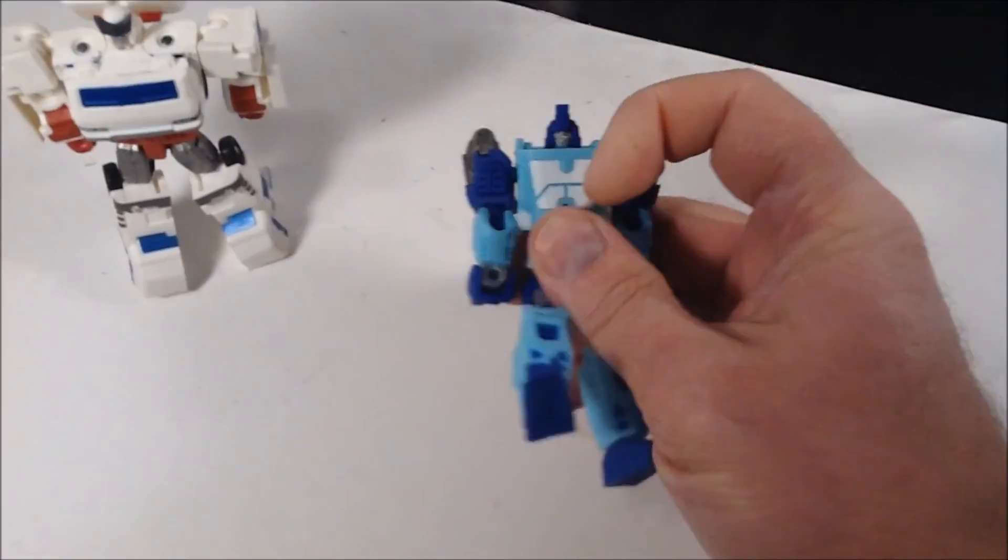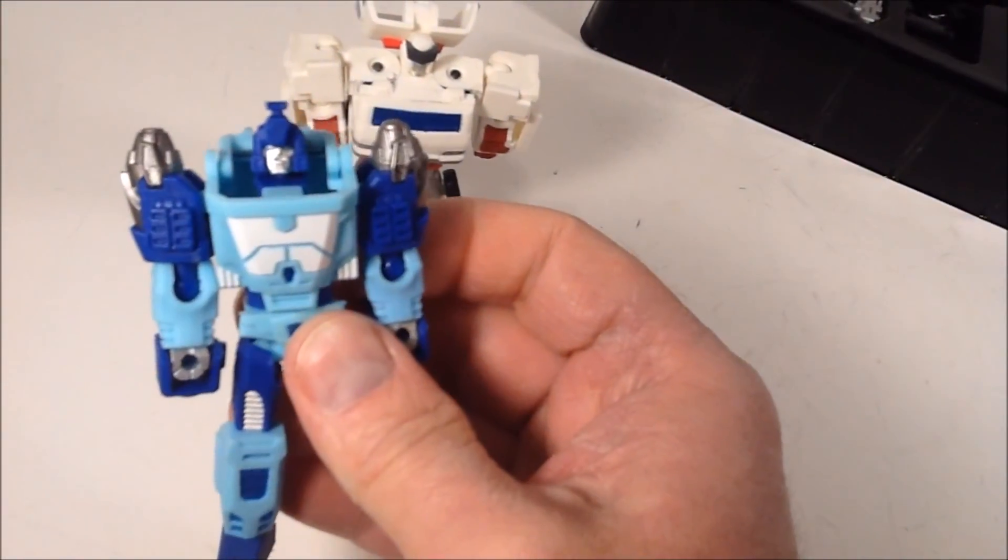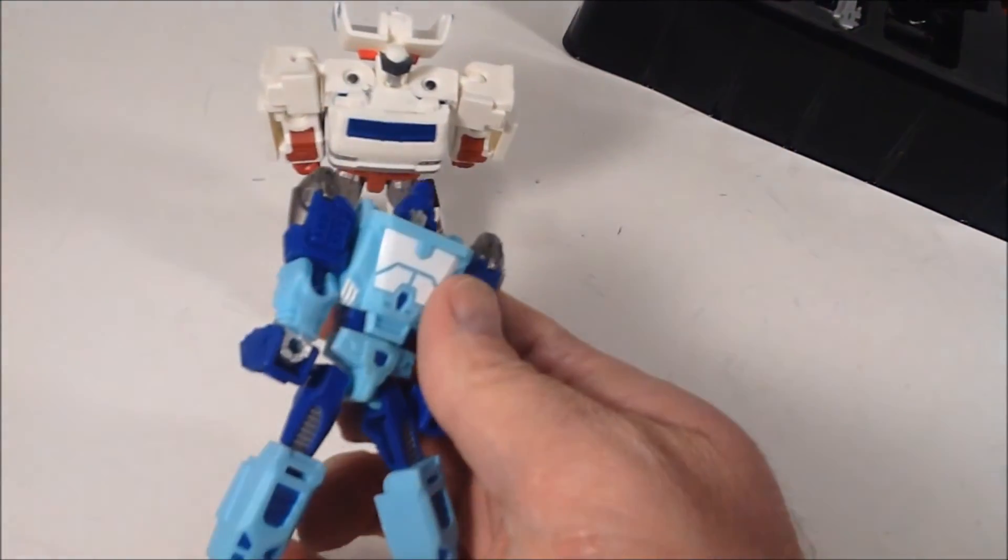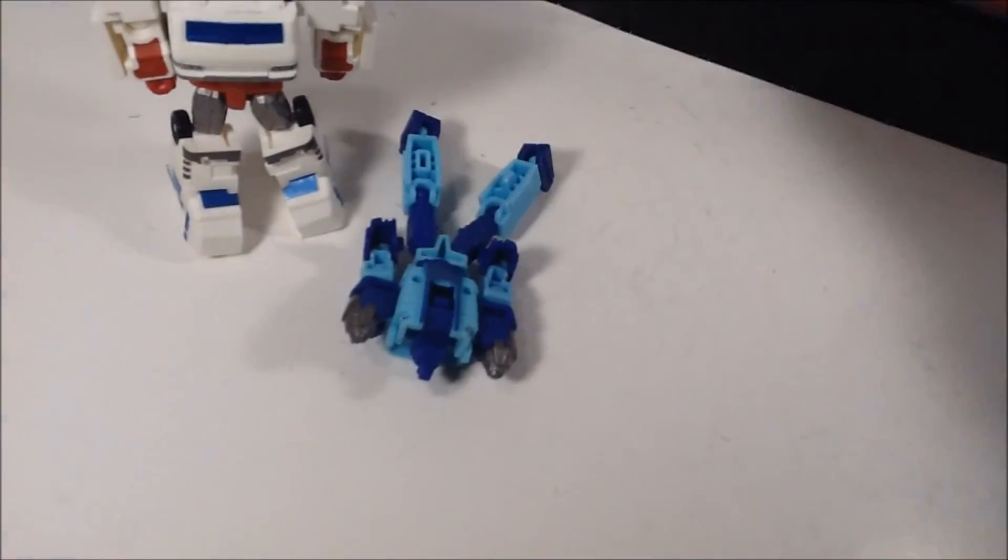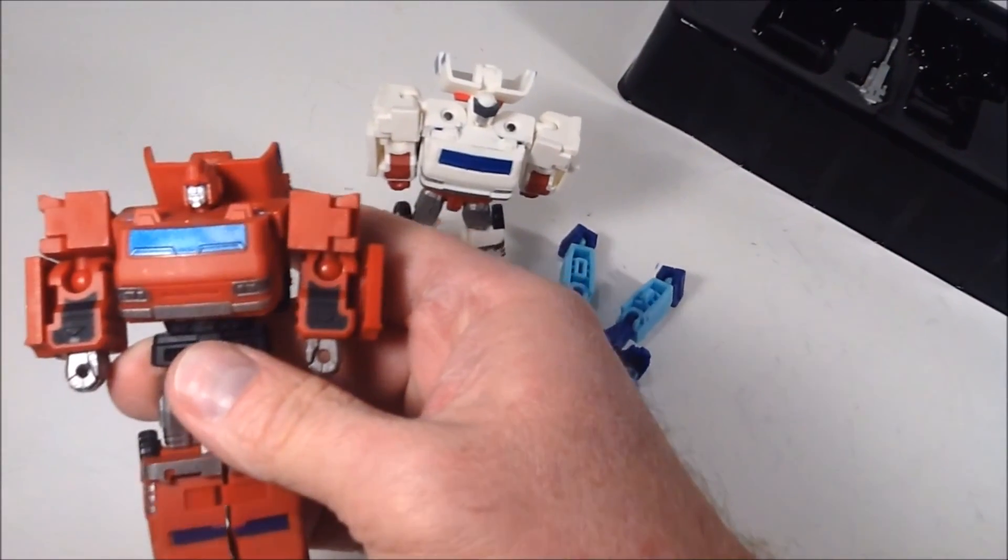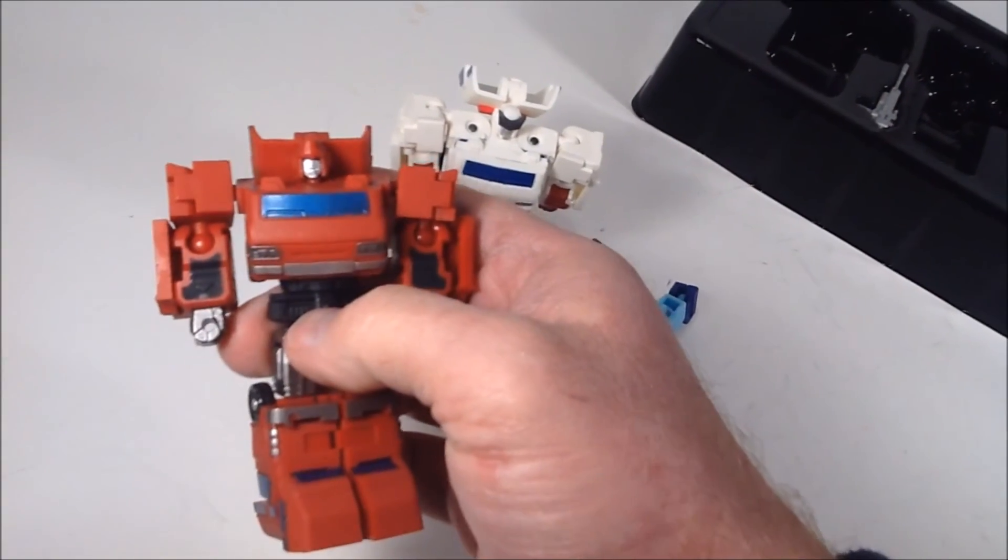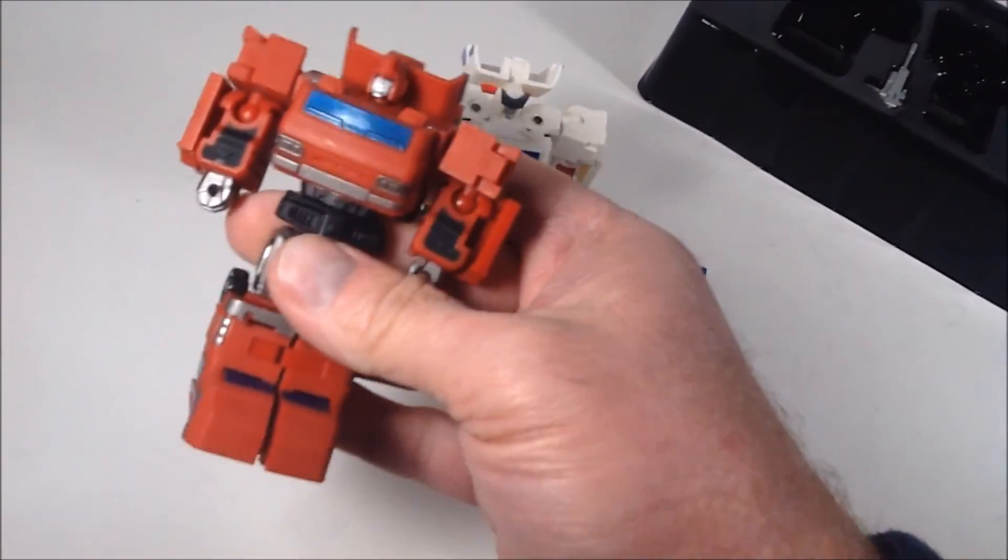Let's get Blur out of the box. Blur. Yeah, it's Blur. Okay. Or Speedo, or whatever his name is. He's got a really nice head sculpt. I know it doesn't come off very well on my camera, but he's got a really nice head sculpt.